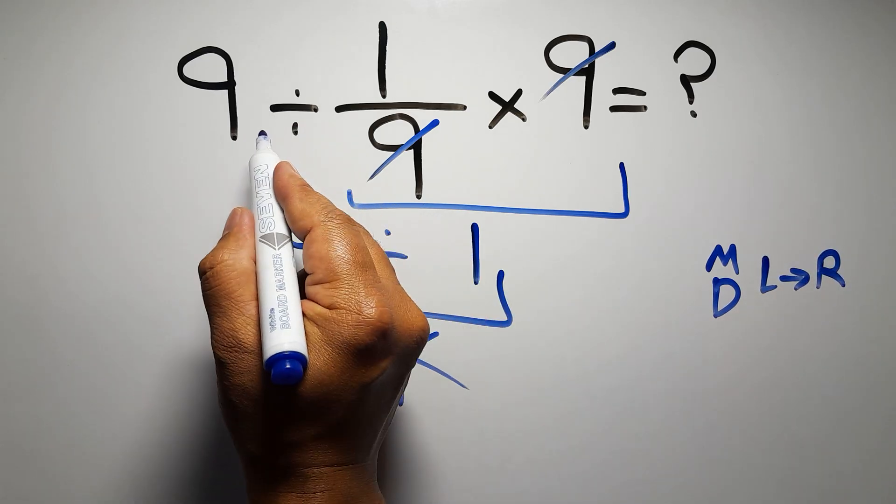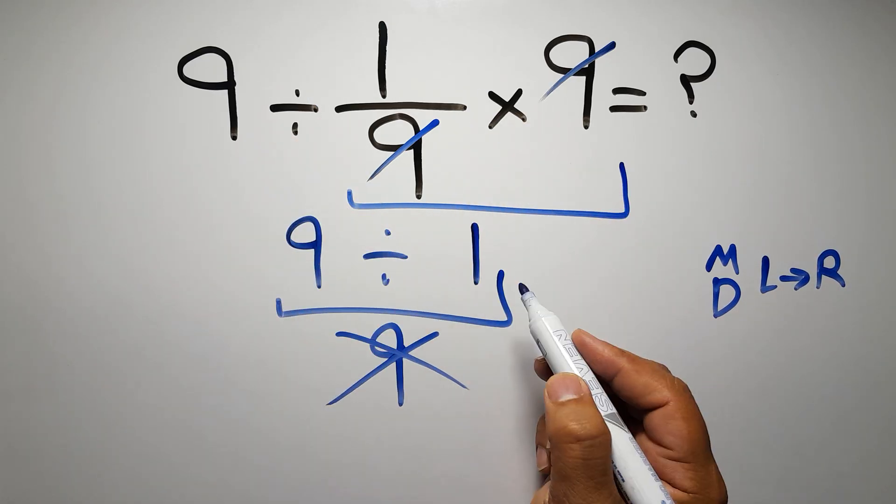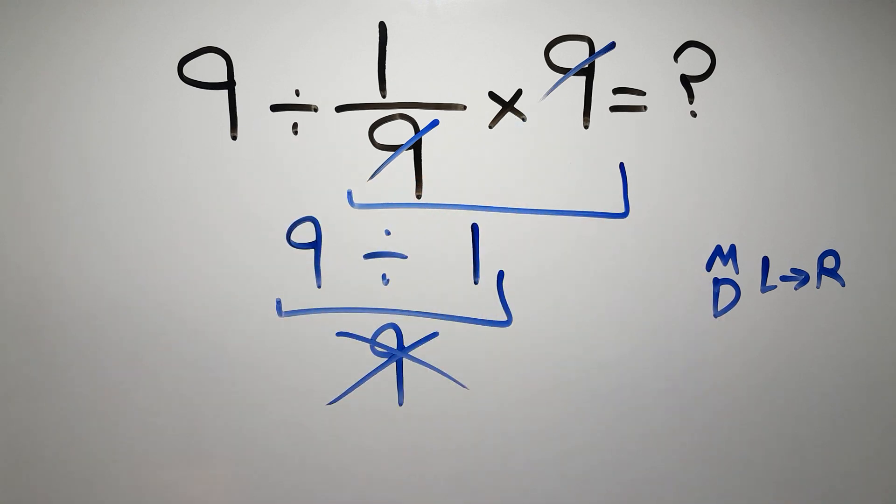So here, first we have to do this division, then this multiplication. If we do this multiplication before this division, it is wrong.